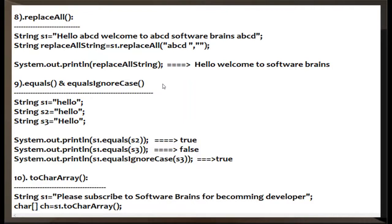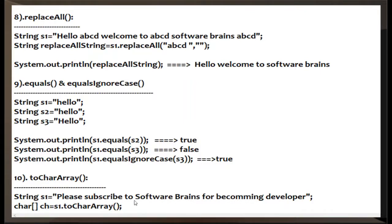For equals and equalsIgnoreCase: both s1 and s2 are "hello", so s1.equals(s2) returns true. But if s3 is "HELLO" in uppercase, then s1.equals(s3) returns false due to case difference. To avoid that, use s1.equalsIgnoreCase(s3), which returns true. For toCharArray: a string like "please subscribe to software brains" — all characters including spaces get stored in a character array, which you can iterate with a for loop to print character by character.